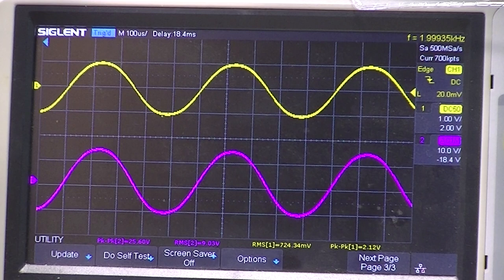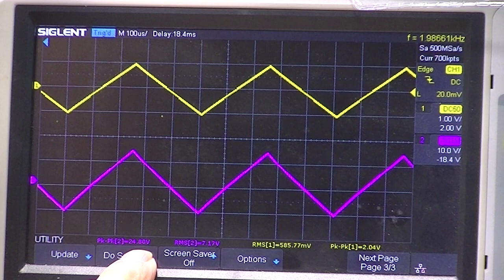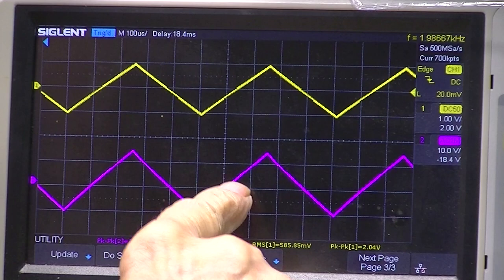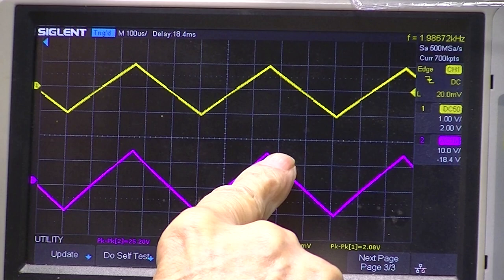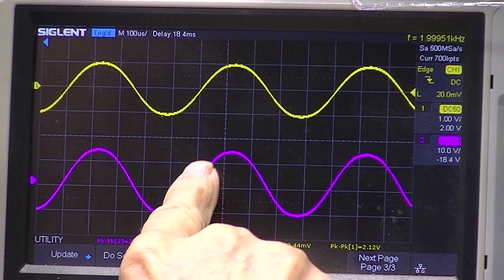I'll change to a triangle. Now that's down. Still a 24.8 volts peak to peak. But it's down to 7 volts RMS because there is less area in the triangle compared to the sine wave which has more area in it.